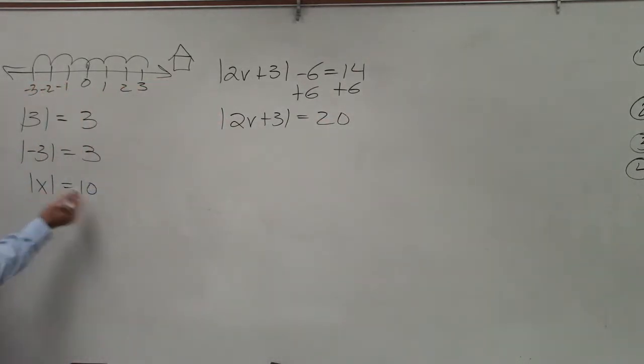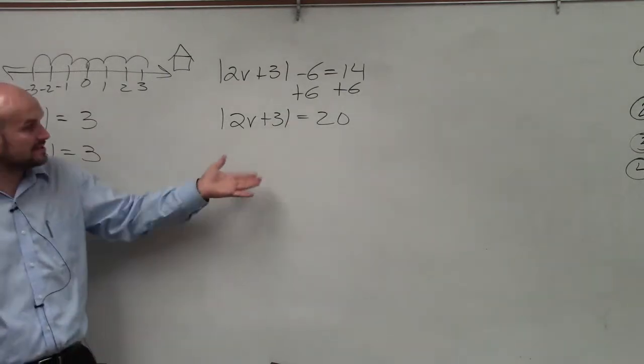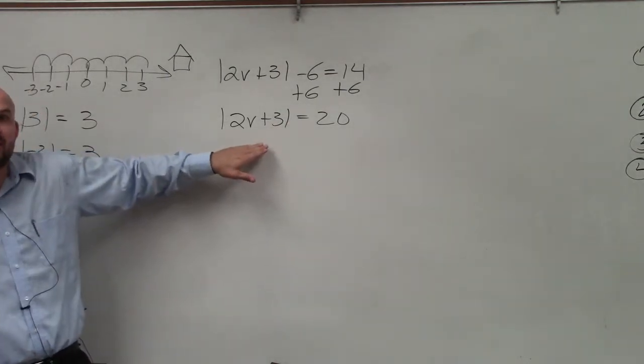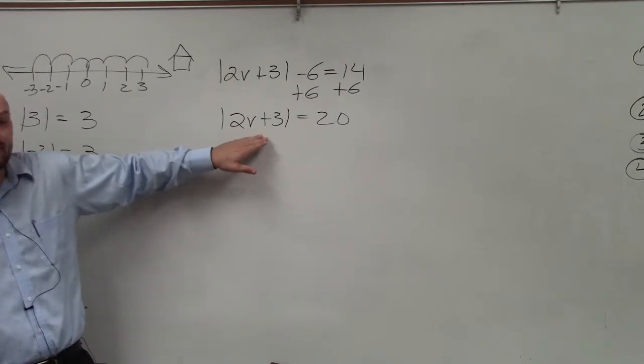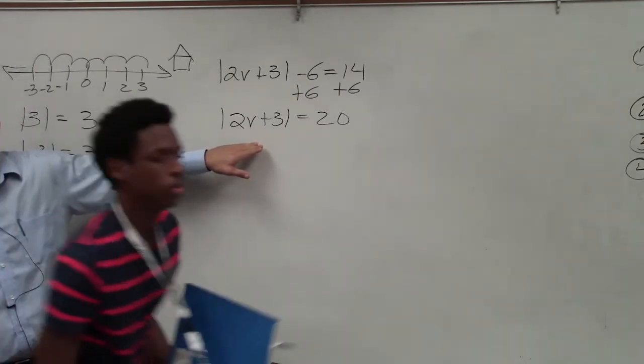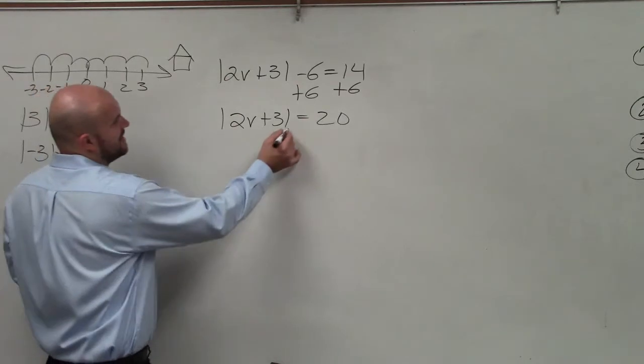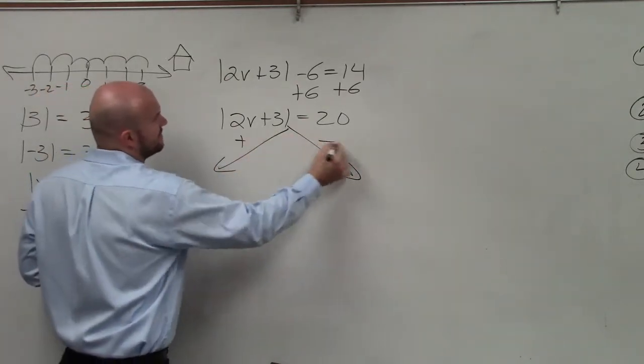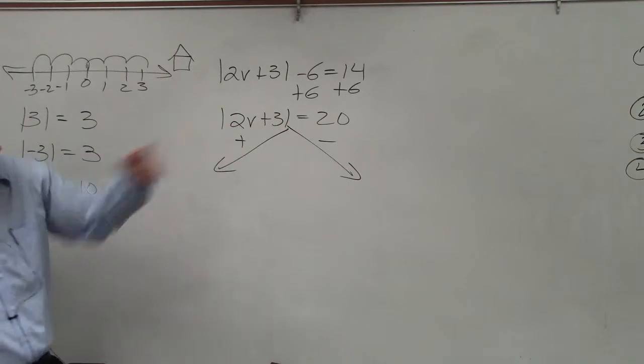Now the next thing is, remember we said this could be a negative number and a positive number. This could be negative 10, and it could also be 10. It could be one or the other. So we need to create two cases. We want to create the case where my variable is positive and the case where my variable is going to make a negative value. So my two cases is the positive and the negative.